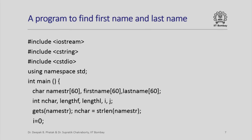Here is a program. Note that here we have included both the library cstring and cstdio, which permits us to use both the functions that we have seen earlier. These are the definitions of the variables and arrays: namestr, firstname, lastname. We have nchar which we use to represent the total number of characters in the array namestr, and we have lengthf and lengthl to represent the length of the first name and length of the last name respectively. i and j are index variables which we will use as stated earlier.